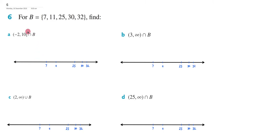when does B intersect with this interval, or with this interval, or what's the union of B with this interval? And what I've done for each question is simply put in a number line, and put in all the points of B, so 7, 11, 25, 30, and 32, and this is just going to help us visualize it if you're having trouble with this question.